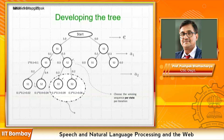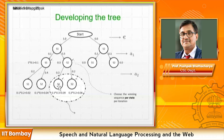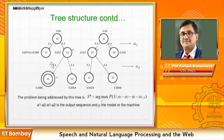The Viterbi assumption does not kick in at the first and second levels because there are no paths ending in the same state there. But after that, when multiple paths end in the same state, we take the path with maximum probability and discard others. This is correct because the discarded paths will never produce a winning path — each state will see the same suffix of observations from that point. This is how Viterbi proceeds to find the best path.